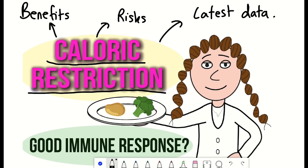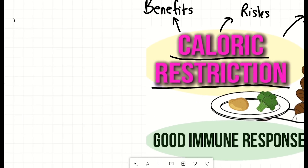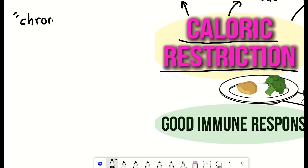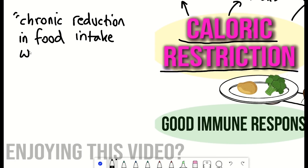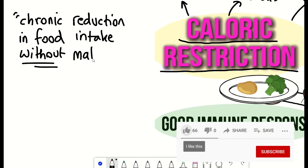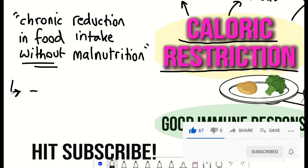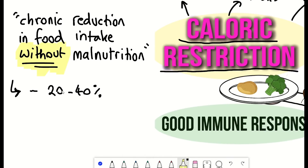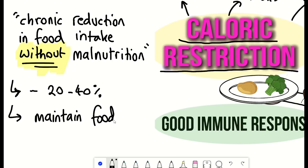So firstly, what is caloric restriction? The definition I like to use is that calorie restriction is the chronic reduction of total calorie intake without malnutrition, and this can range from 20 to 40%. It's important to note that avoiding malnourishment is key — calorie restriction doesn't just mean eating salad all day, but focuses on calorie count whilst maintaining different food components.